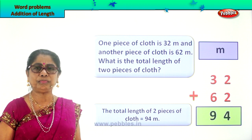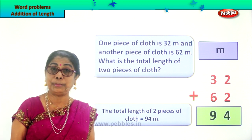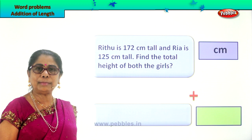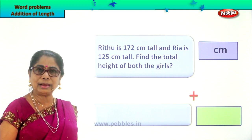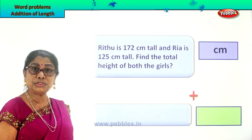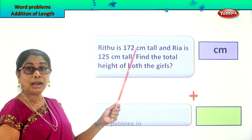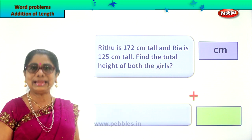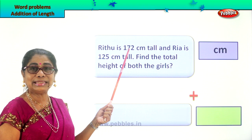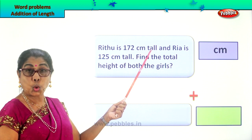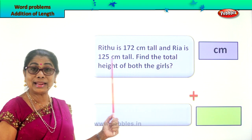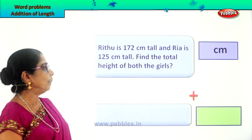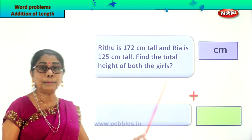Did you enjoy the word problem? Let's look at another new word problem. You love to measure yourself — you stand by the wall and measure, put a line and then take your ruler or meter rod or your inch tape and measure. What is the height? Each one of you likes to see your height, and height is measured in centimeters. Ritu is 172 centimeters tall and Ria is 125 centimeters tall. So here are two girls — they have taken their height. Find the total height of both the girls.